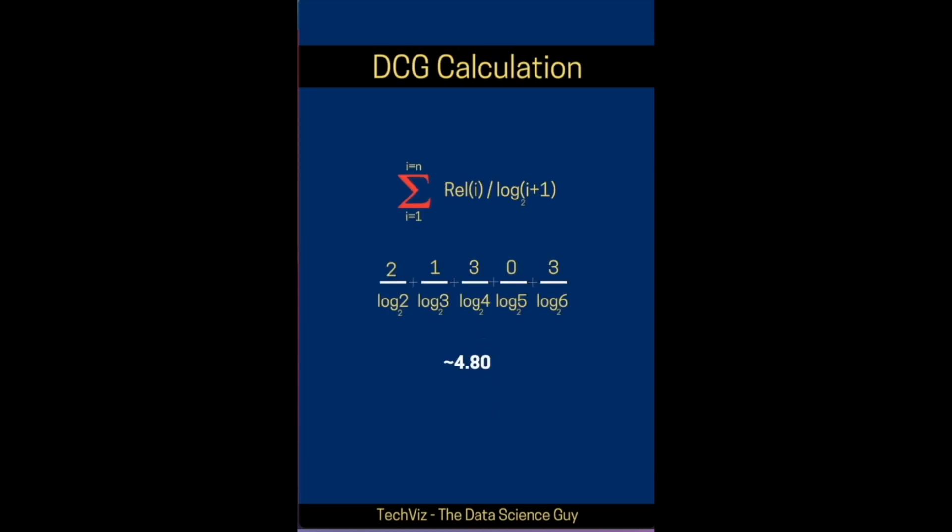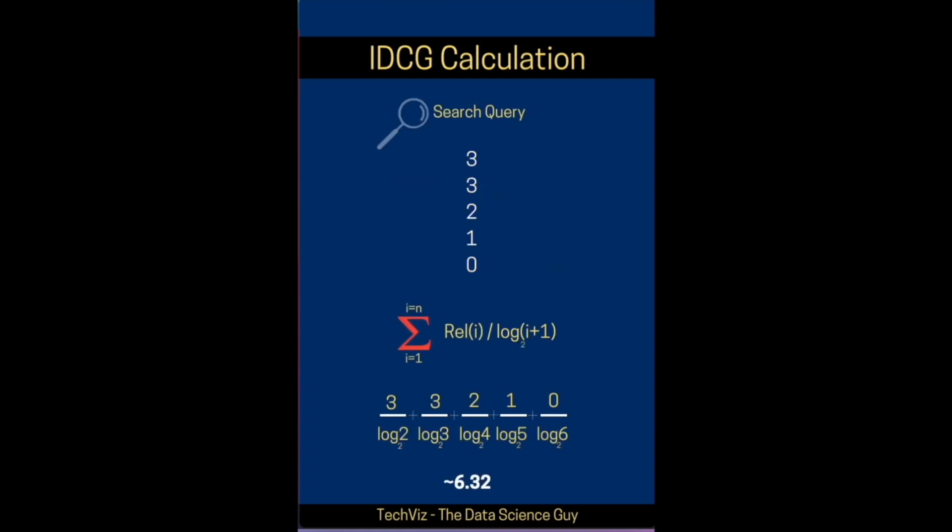The DCG formulation is the summation from i=1 to n results of the relevance of the i-th result divided by log(i+1). So for the numbers that we have seen in the earlier slide, that would resolve to 4.80.